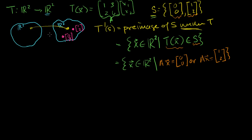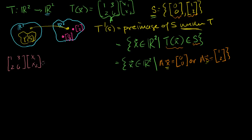So if we want to determine the pre-image of S under T, we essentially have to find all of the X's that satisfy these two equations. The first one is the matrix 1, 3, 2, 6 times (x1, x2) equal to the zero vector. You might already recognize that all of the solutions to this — all of the X's that satisfy this — is the null space of this matrix.